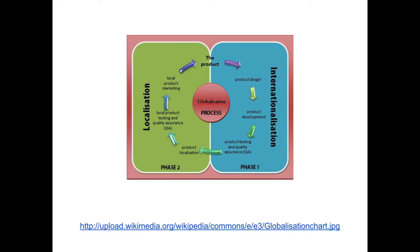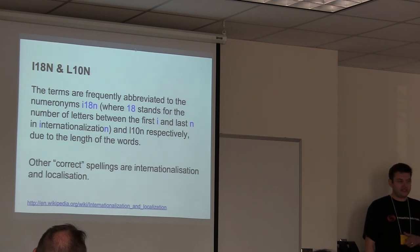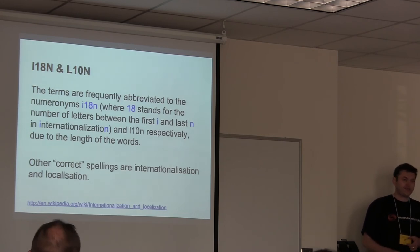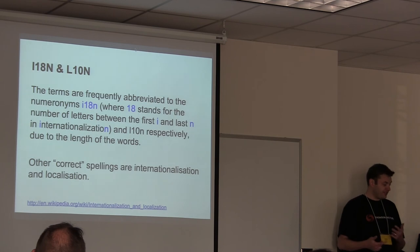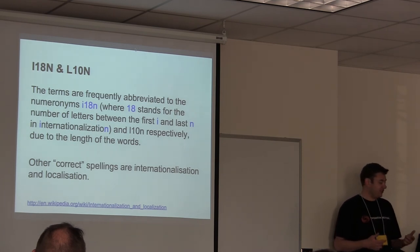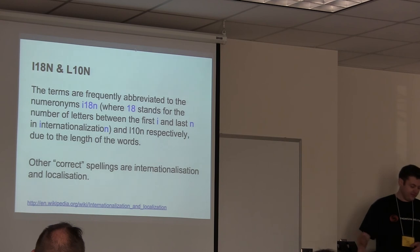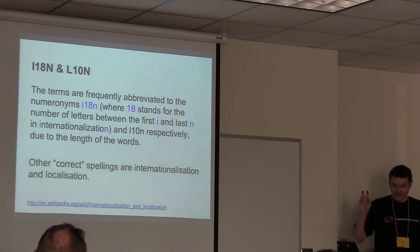Here's a picture from Wikipedia showing how internationalizing and localizing form a cyclical process called globalization. You may also see the terms I18n and L10n. These abbreviate internationalization and localization because they're so long. It's called a numeronym — they took the number of letters between the I and the N, which is 18, giving us I18n. Internationalization and localization with an S are also correct spellings.